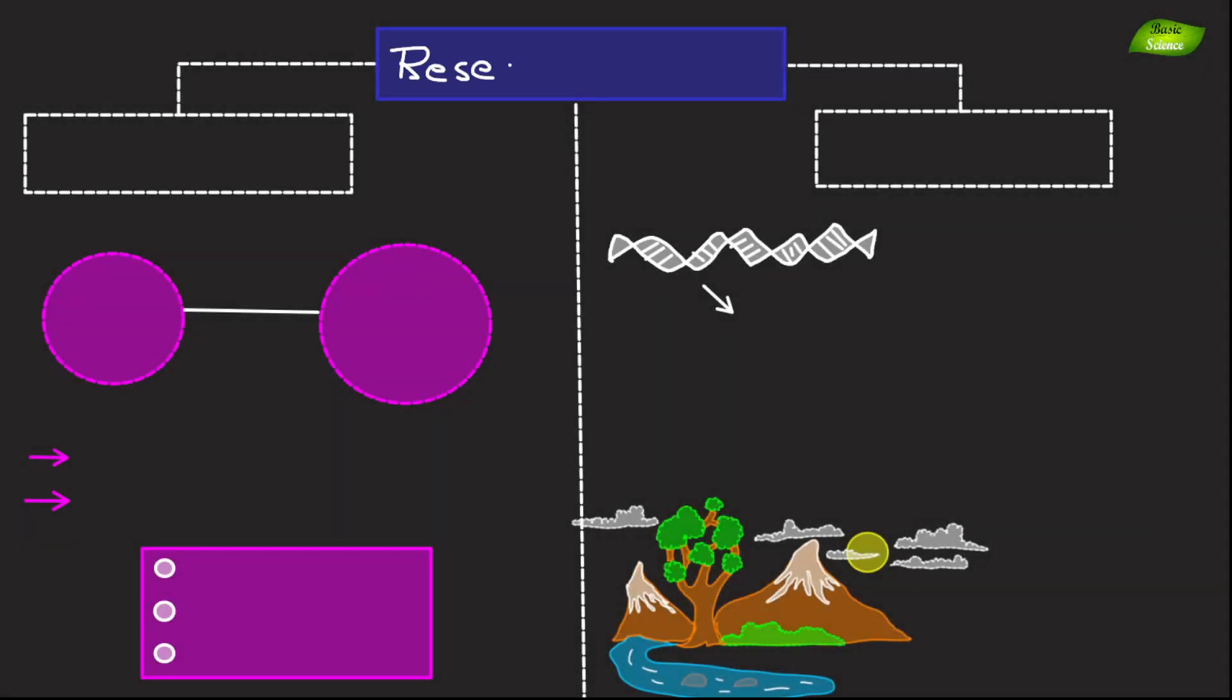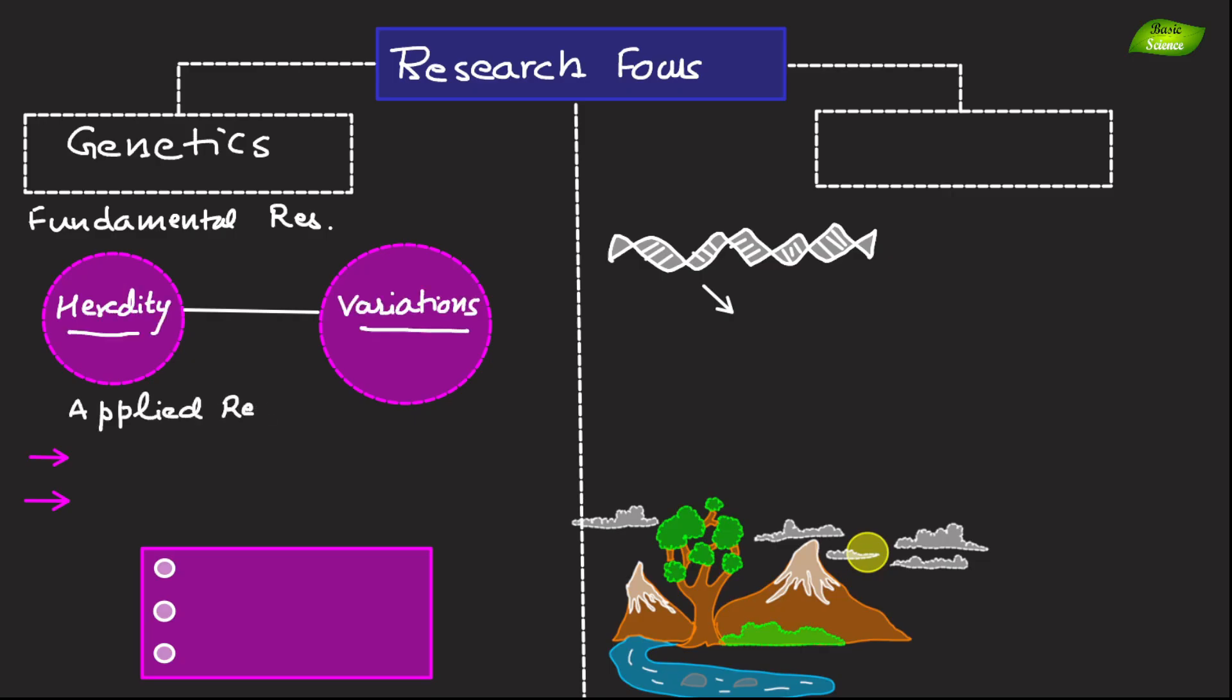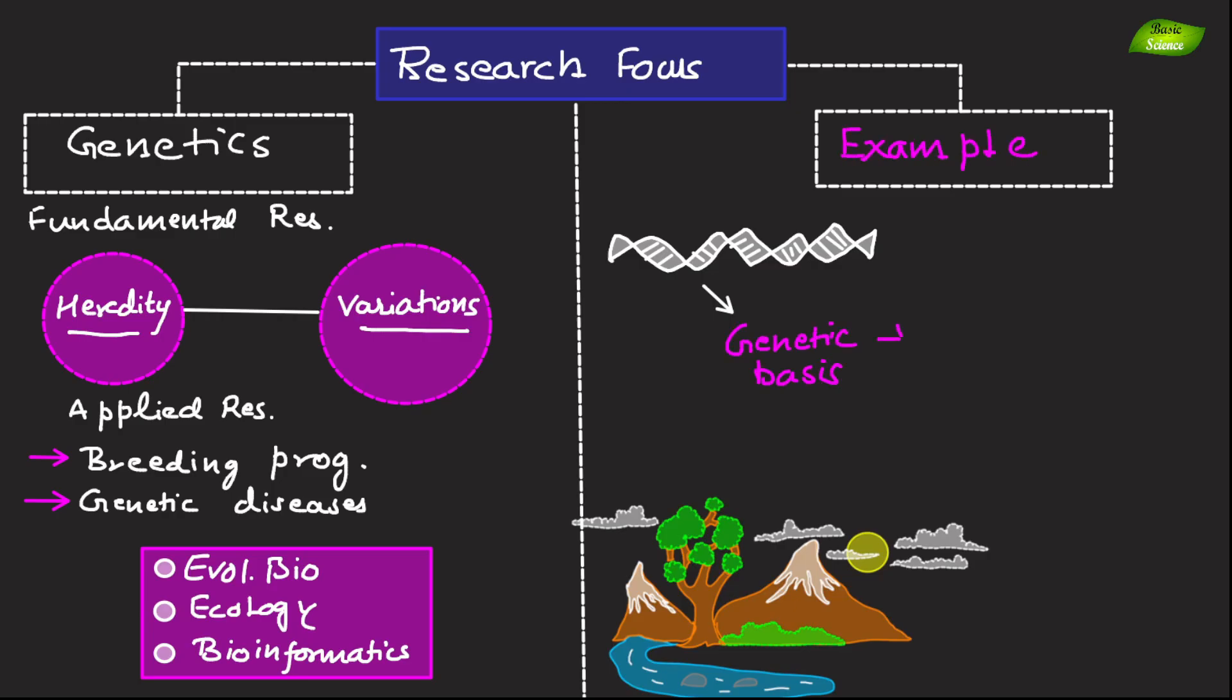The research focus of genetics includes fundamental research to understand the principles of heredity and genetic variations, as well as applied research to improve breeding programs and manage genetic diseases. This often involves collaboration with fields like evolutionary biology, ecology, and bioinformatics. An example includes investigating the genetic basis of adaptation in natural populations to understand how species evolve and respond to environmental changes.